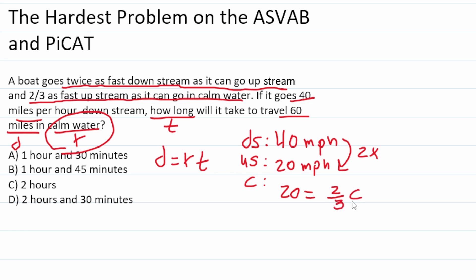So in order to figure out what C is, we're going to just get rid of this two-thirds by multiplying both sides of this small equation by its reciprocal. It crosses out leaving you with C on this side. We're multiplying two fractions so we multiply straight across. 3 times 20 is 60. 2 times 1 is 2. 60 divided by 2 is 30. So the rate of the boat in calm water is 30 miles per hour. Now we have all the information we need to solve this one using the distance formula.